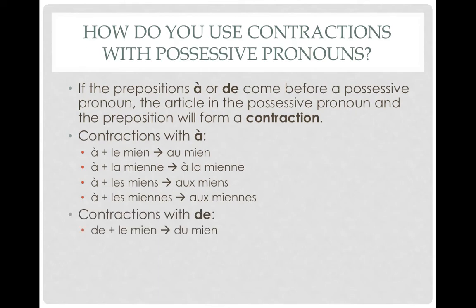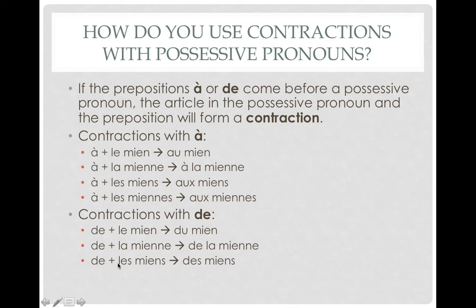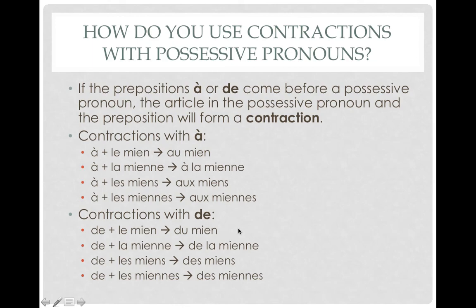For contractions with de: de and le mien combines to become du mien. De and la stays the same: de la mienne. De and les becomes des miens, and for feminine, des miennes. This doesn't only apply to miens — it could be de plus le tien becoming du tien, or du sien, and so on. Anytime you have de and le, they combine. This should be a refresher, not something new.